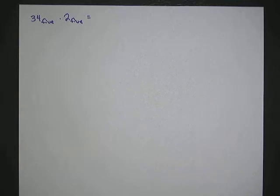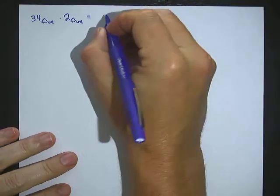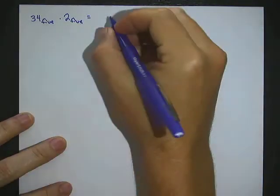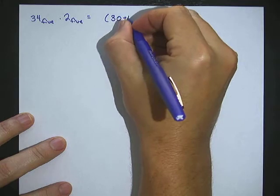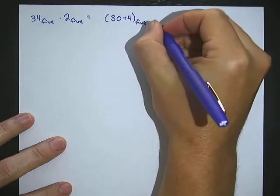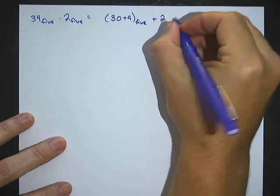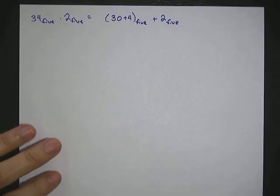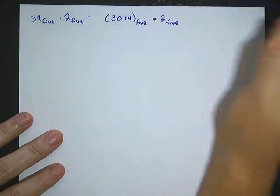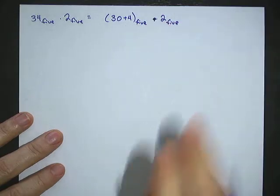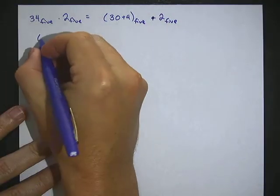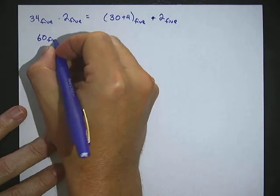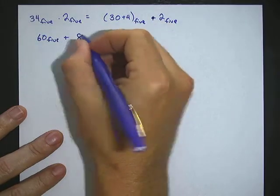In this problem we've got 34 base 5 times 2 base 5. The strategy we're going to take is to distribute first by rewriting 34 base 5 as 30 plus 4, base 5, times 2 base 5. We distribute that into the parentheses, so we get 60 base 5 plus 8 base 5.